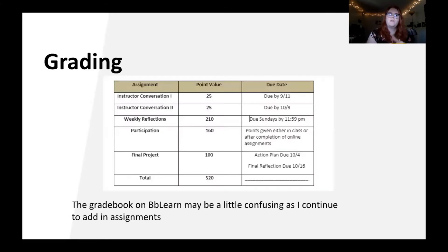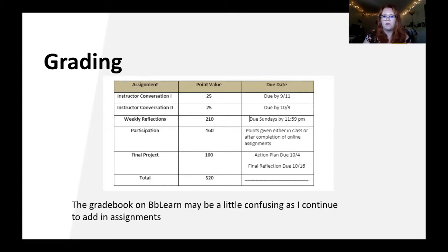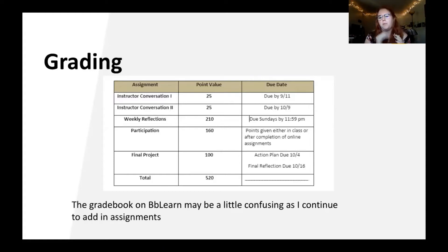Grading for this course is pretty straightforward. You'll have two instructor conversations, each worth 25 points. You'll have weekly reflections for a total of 210 points — there are seven of them. Participation is 160 points, at 10 points per class, 20 points per week. There is a final project — an action plan and a final reflection — worth additional points, for a total of 520 points. Note that the gradebook on BB Learn might look a little funky right now as I'm still rearranging some assignments.